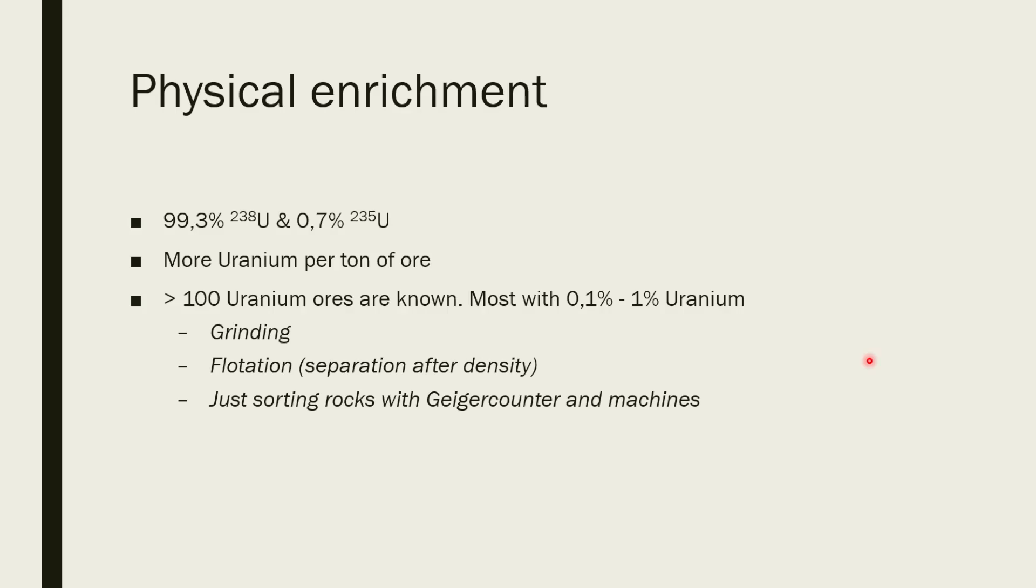Flotation works because uranium is very dense, so anything that contains a lot of uranium has a higher density than stuff that doesn't contain as much uranium. Or you can just sort them by using a Geiger counter and everything that is the most active contains the most uranium content.